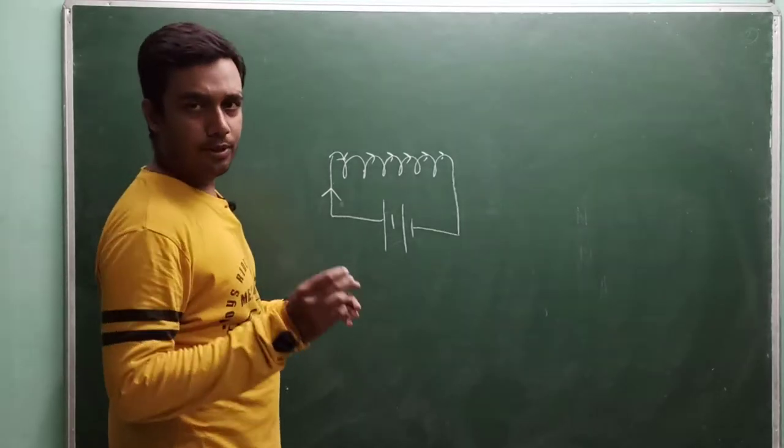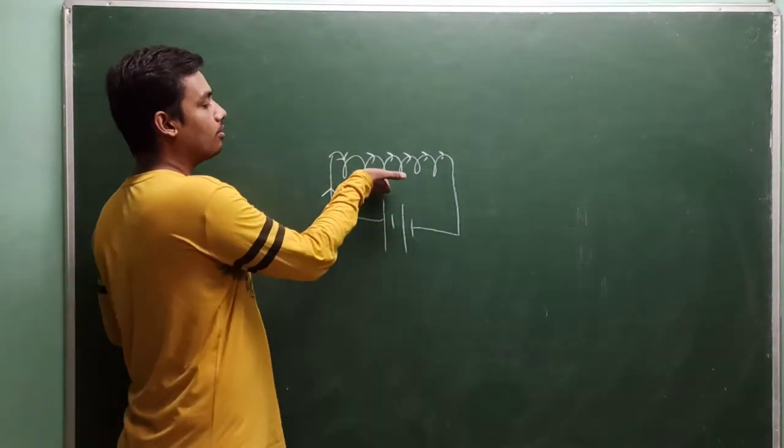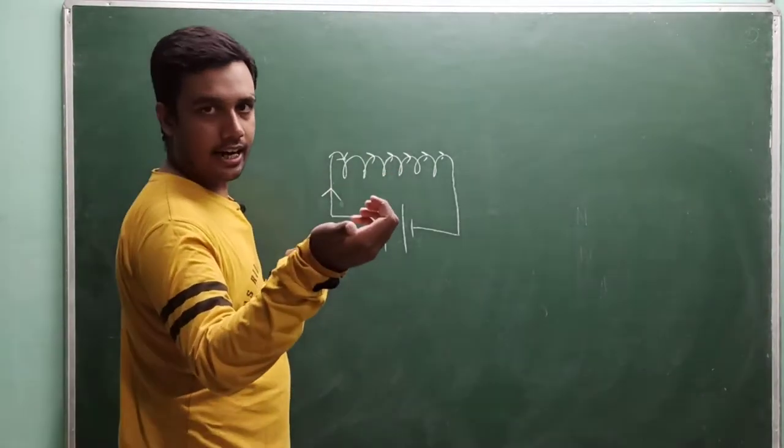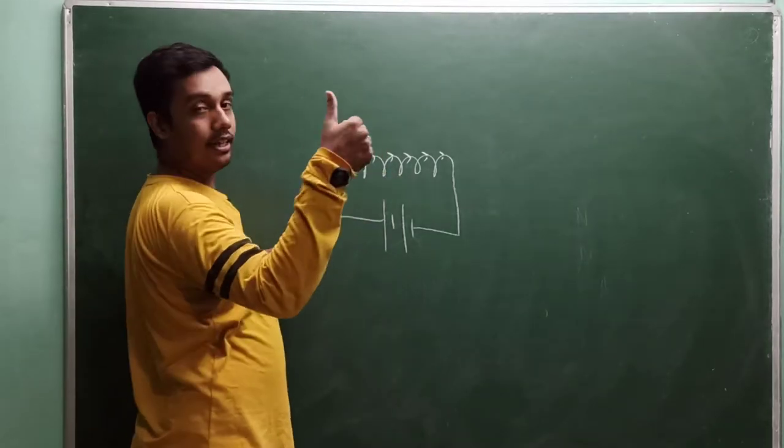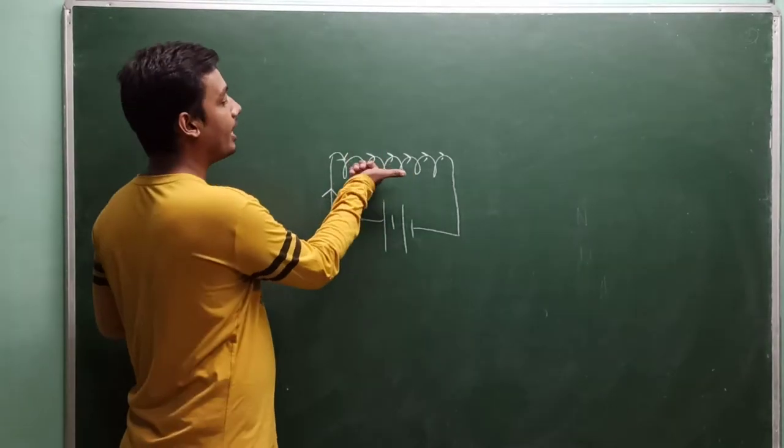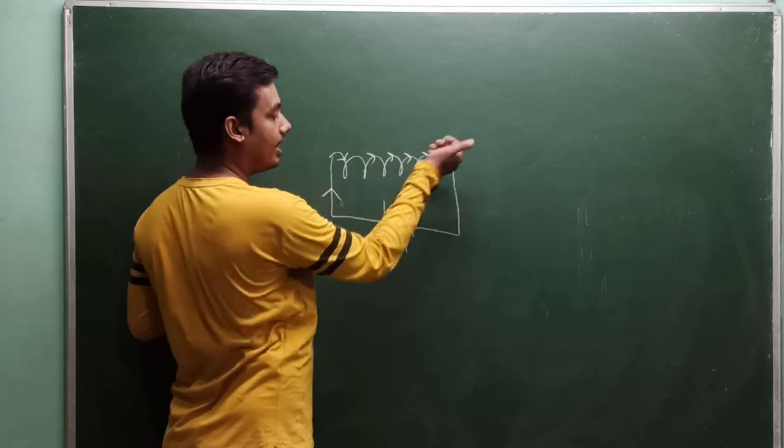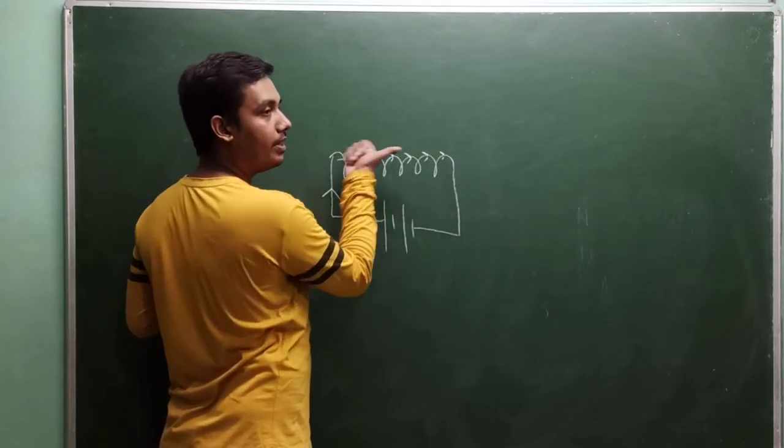So simply what you have to do, you have to hold the solenoid with your right hand, and the thumb should point in the direction of the current. If the current is this way, I will hold it in the direction of the current.